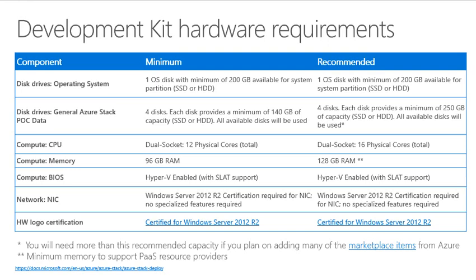From the second column: one OS disk with 200 GB — either SSD or HDD will work — or 4 disks for the POC. A dual socket CPU is required. Looking at RAM, the minimum requirement is 96 GB. The recommendation is 128 GB RAM and a 16-core dual socket configuration.